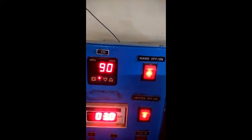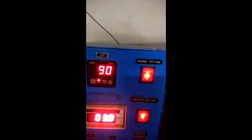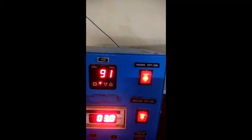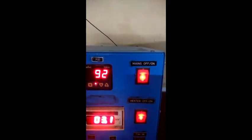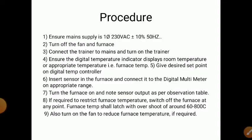For 90 degrees Celsius, the reading is 3.0 millivolts. Note down the final reading for 100 degrees Celsius and then turn on the fan. This completes the procedure.